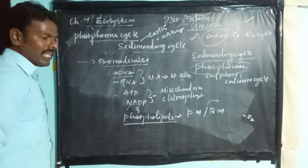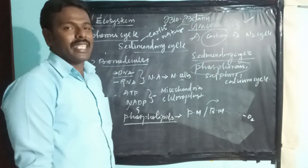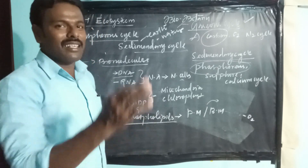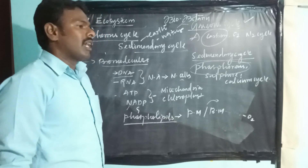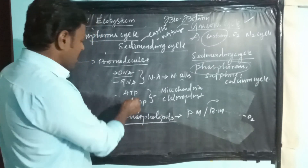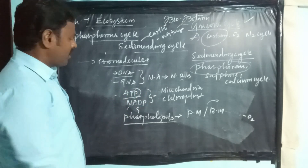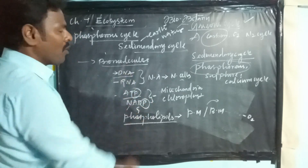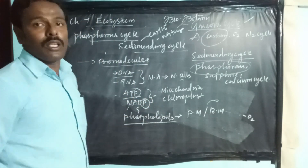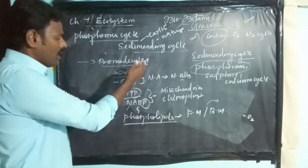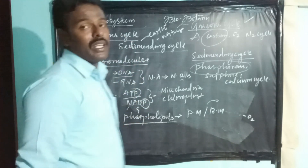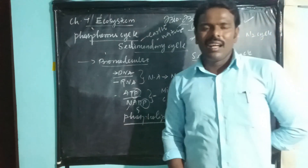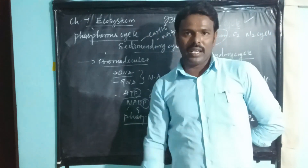DNA is found in nucleotides and nucleosides, and the nucleotide contains a phosphate group and a nitrogenous base. Adenosine triphosphate is found with the phosphate adenine. Nicotinamide adenine dinucleotide phosphate — all these biomolecules have phosphate molecules. Thus, phosphorus is not abundant in the atmosphere.